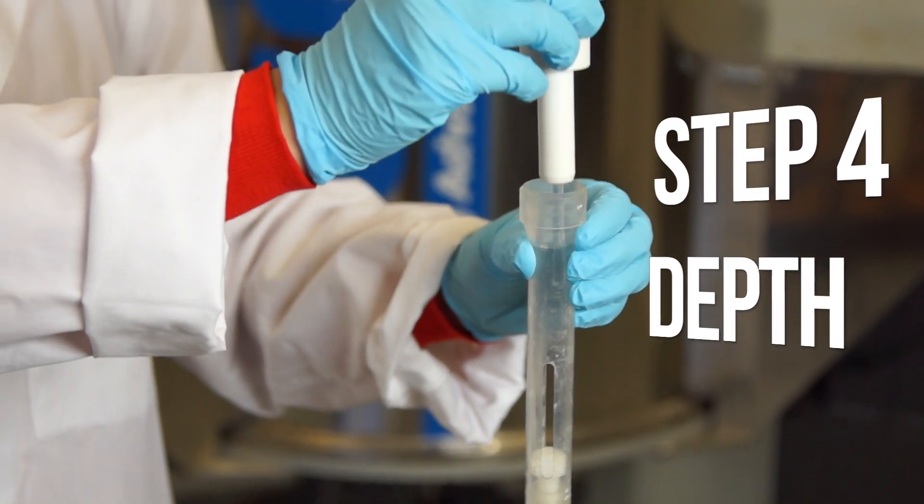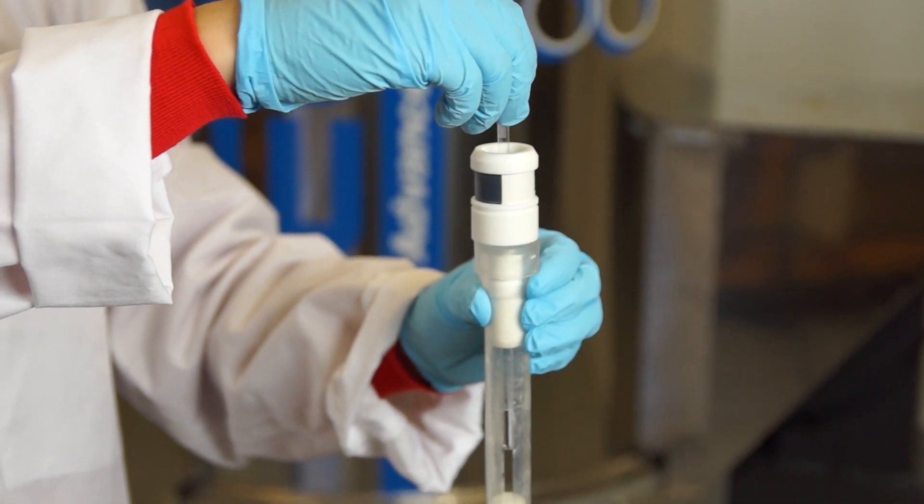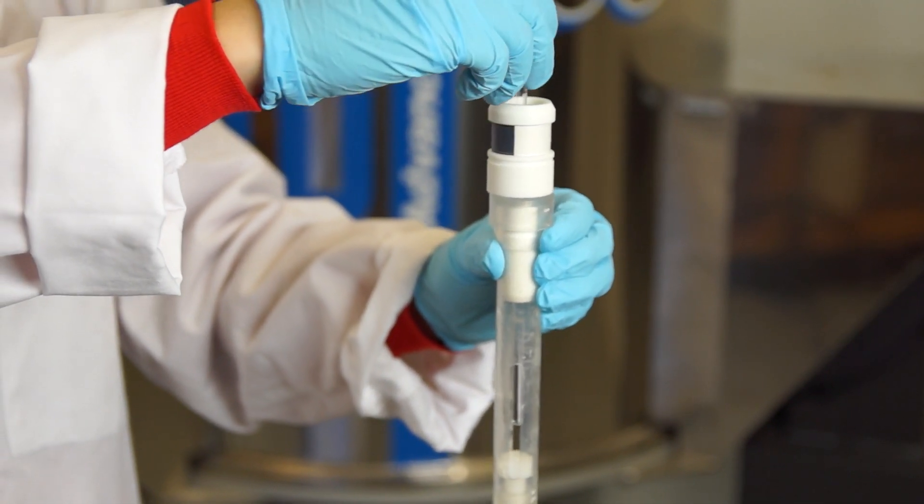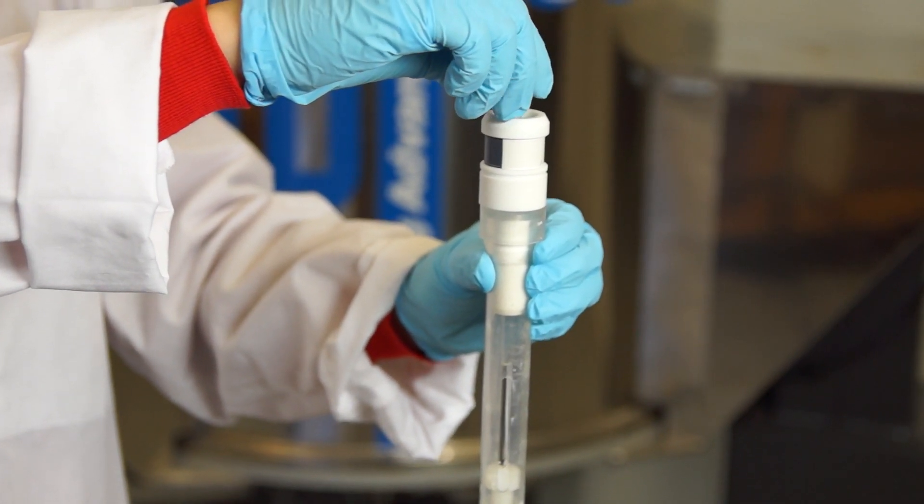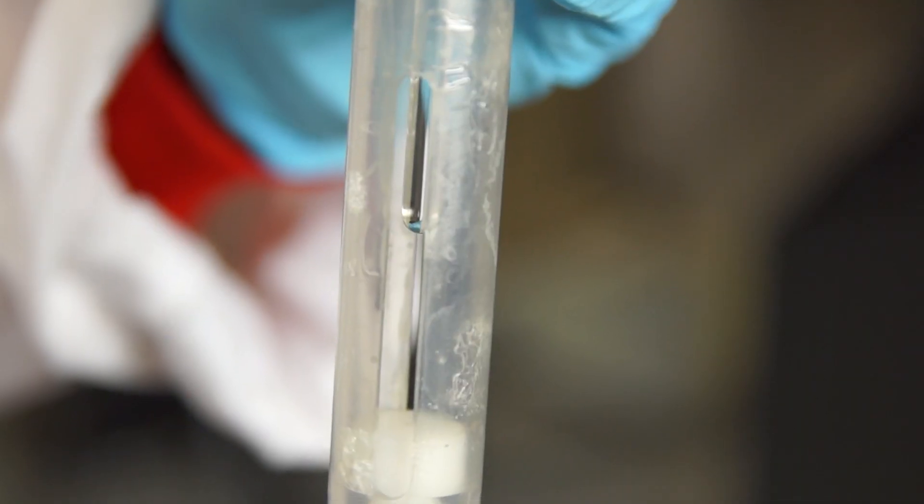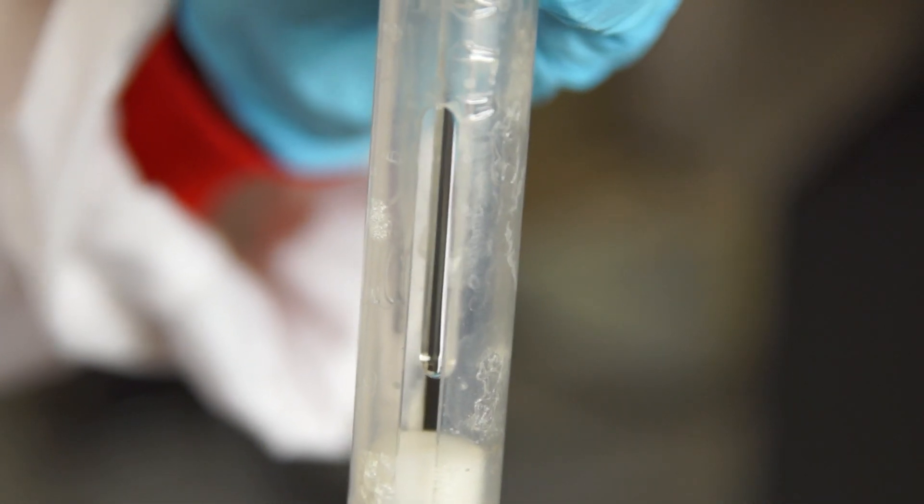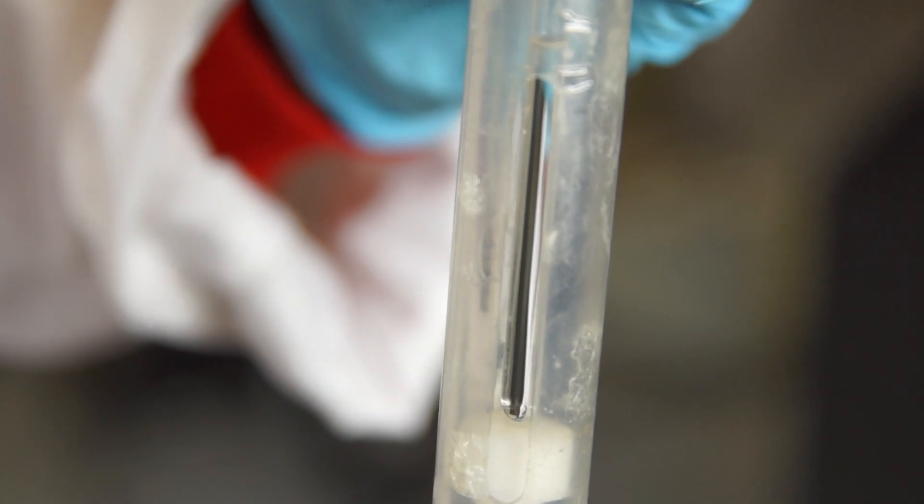Step 4 is to check how far to push down the NMR tube. Use the depth gauge. And now, push down the NMR tube gently until the bottom of the tube hits the plastic at the bottom of the depth gauge. They should just barely be touching.